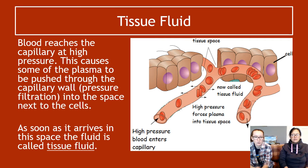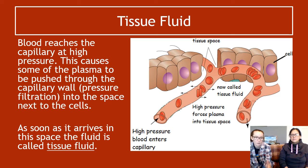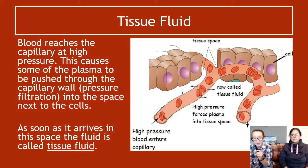When blood reaches a capillary at high pressure — having come down the artery — this causes some of the plasma to be pushed out through the wall of the capillary. Remember, capillary walls are only one cell thick, so it's easy for something to be pushed through. Some plasma is pushed out into the space beside the blood vessel. As soon as that plasma has been pushed through the capillary wall into the tissue space, it is now called tissue fluid.